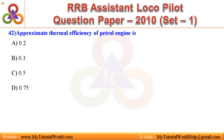Question 42: Approximate thermal efficiency of petrol engine is — A. 0.2, B. 0.3, C. 0.5, D. 0.75. Answer is 0.3.